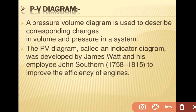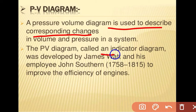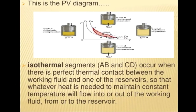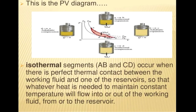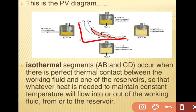A pressure-volume (PV) diagram is used to describe the corresponding changes in volume and pressure in a system. The PV diagram, also called an indicator diagram, was developed by James Watt and his employee James Southern to improve engine efficiency. The PV diagram shows isothermal expansion, adiabatic expansion, isothermal compression, and adiabatic compression — the four stages of the Carnot cycle.